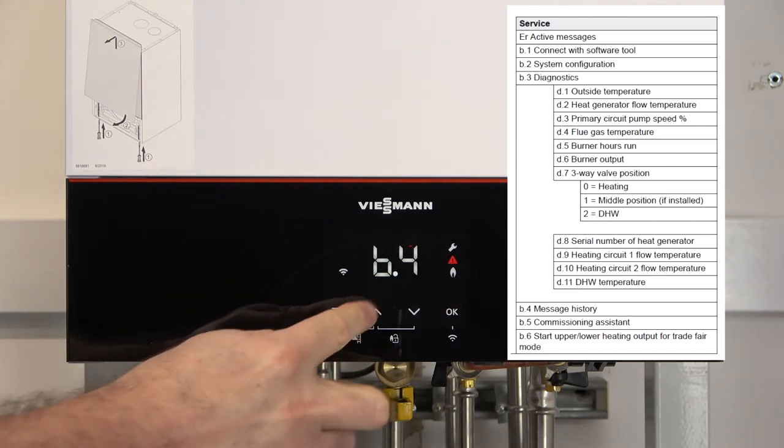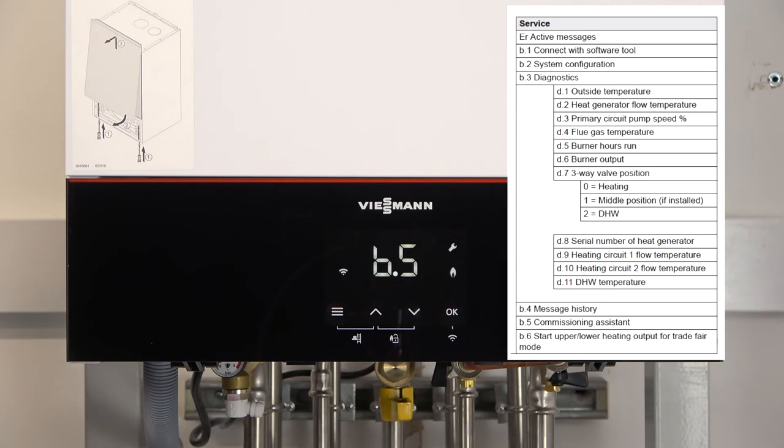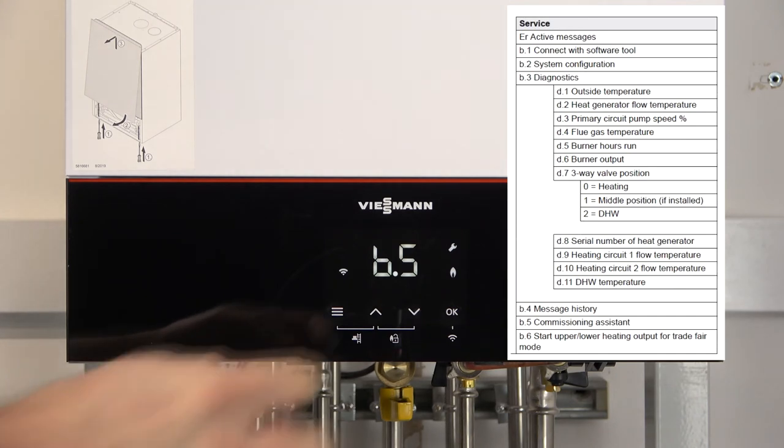We can also see B5. It's how we get into our commissioning assistant. If you haven't yet seen our video on the commissioning assistant, then please refer to the YouTube installer channel where you can find some videos on where we access the commissioning assistant and also where we can access it to get into access point for commissioning to do with our Viessmann Guide app.